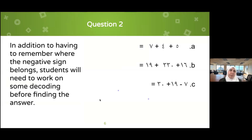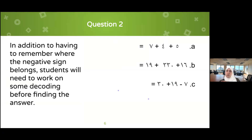In addition to remembering where the negative sign belongs, question two requires some decoding before finding the answer. Some of you said you needed more time to go back to the table and look at the numerals. Notice how I've scaffolded the questions: first just the direction changes, then the numerals change, then more language is added and they become more complex. Sometimes we forget to do that — especially if students join later in the year — and there's so much decoding happening, which causes cognitive overload.